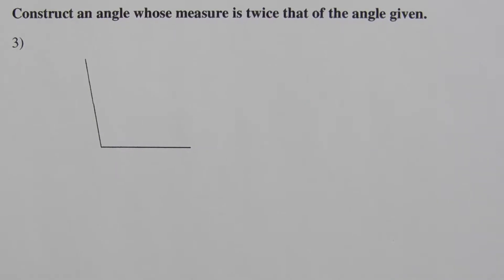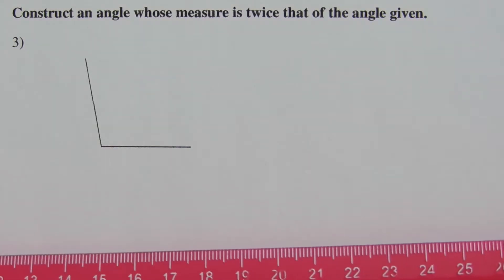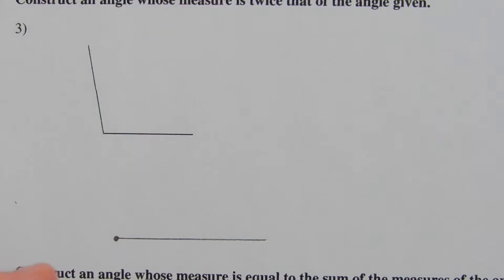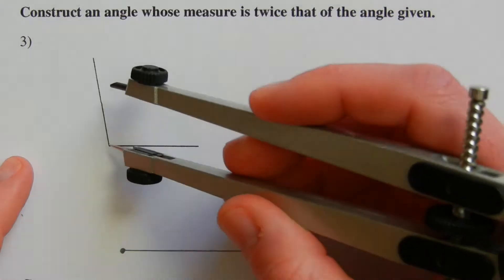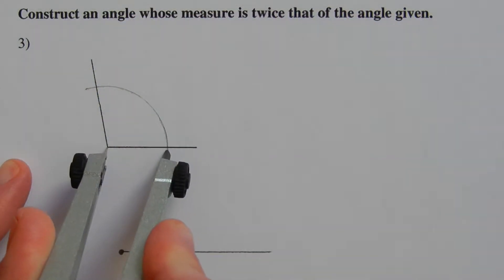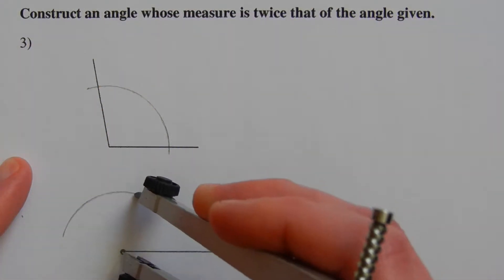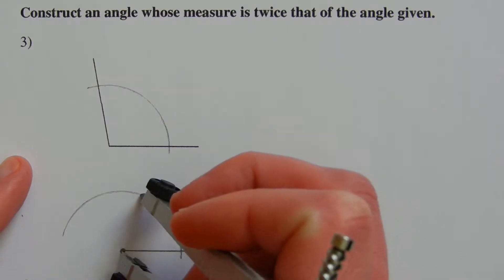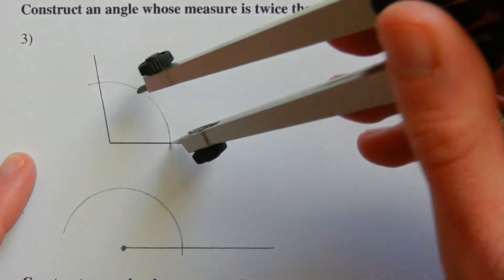For number three, we construct an angle whose measure is twice that of the given angle — essentially doubling it, or adding it to itself. We start with a new segment whose endpoint will be the vertex of our new angle. We take our compass and draw an arc along our original angle, then draw that same arc on the new segment, making it a bit bigger since we'll be adding arcs together.